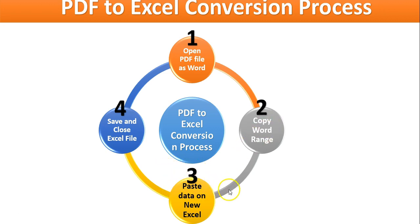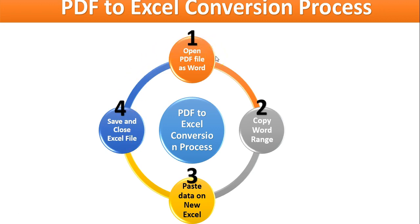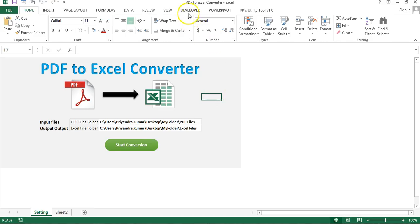In the third step, it pastes that data onto a new Excel file. Then in the fourth step, it simply saves that file and closes the Excel file, and then opens the next PDF file. So these are the four steps to convert PDF to Excel.